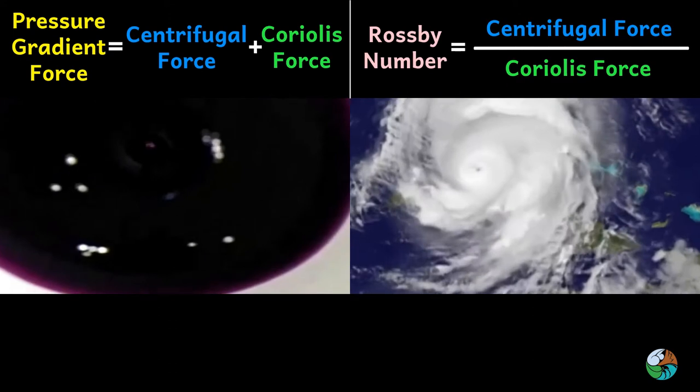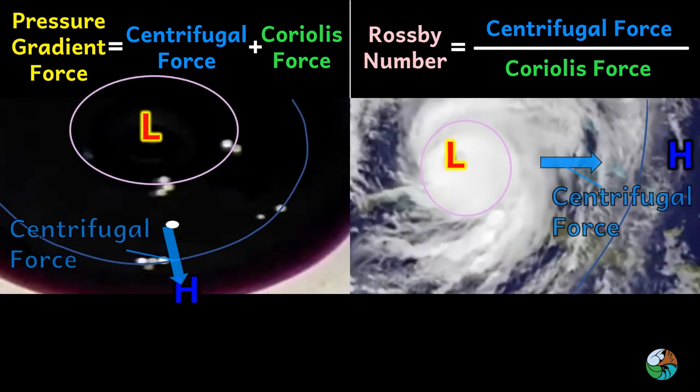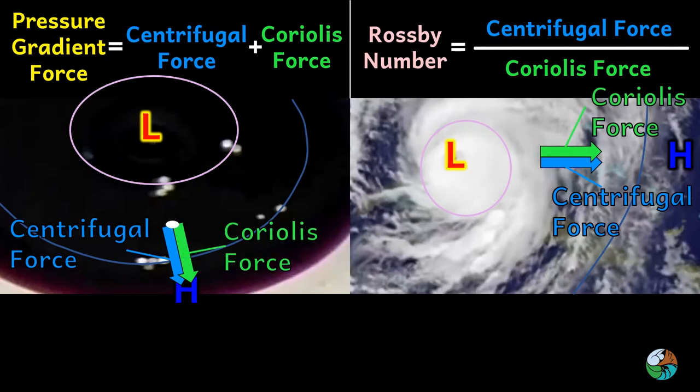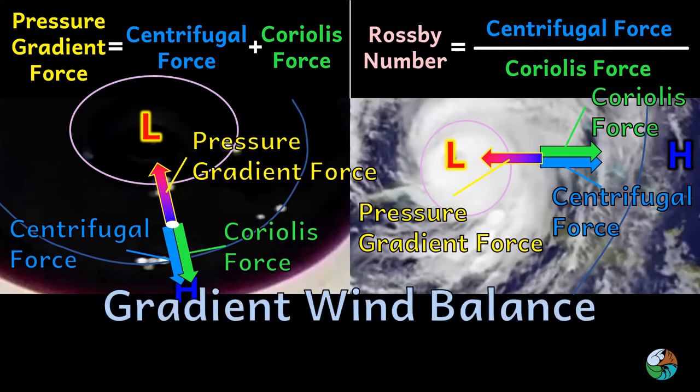At a point with moderate distance from the center, the contribution of centrifugal force and Coriolis force are similar. Both of them together balance with the pressure gradient force. This is called gradient wind balance. The value of the Rossby number is approximately 1.